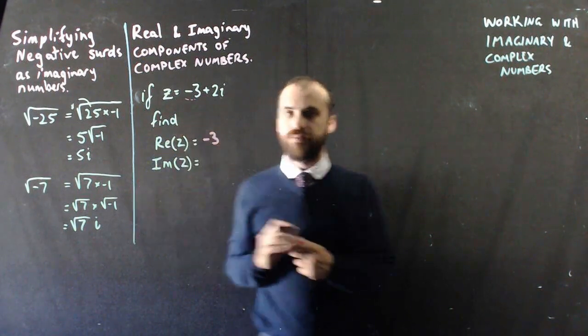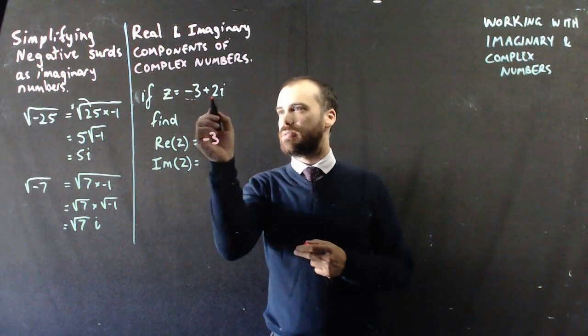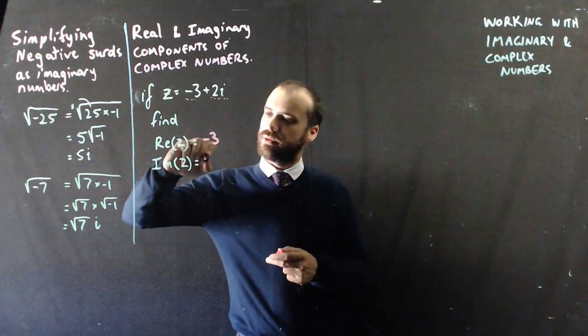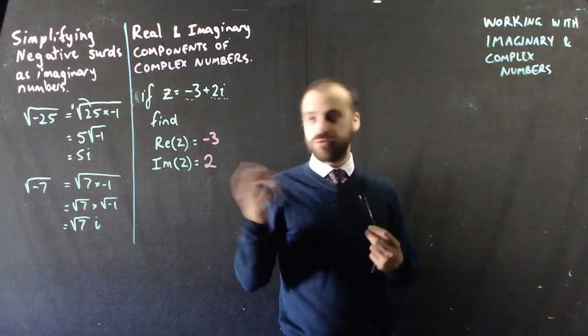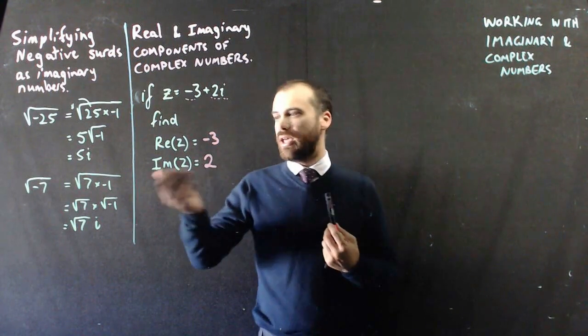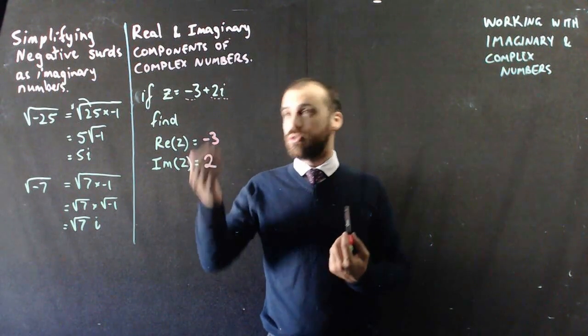Negative 3. The imaginary component of z is this bit right here. Now don't write 2i, just write 2, because if it is an imaginary component what we're saying is it's 2 i's.